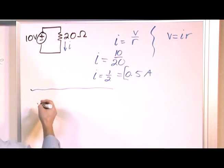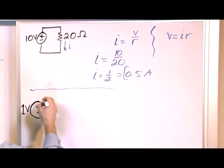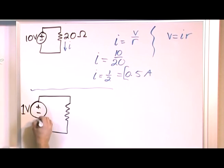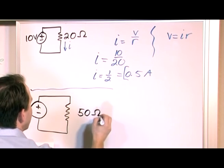Alright, now let's do a little different. The circuit will look the same, but the numbers will be a little bit different. Let's change this to 1 volt. This is now a 1 volt source. And now instead of a resistance that we've been talking about before, this will be 50 ohms.